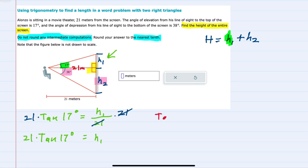Meaning that the tangent of 38 degrees is equal to the opposite side of the triangle, h2, divided by the adjacent side of the triangle, 21.